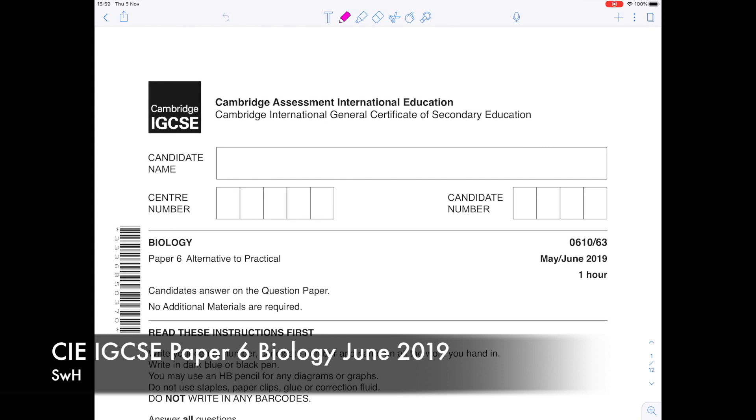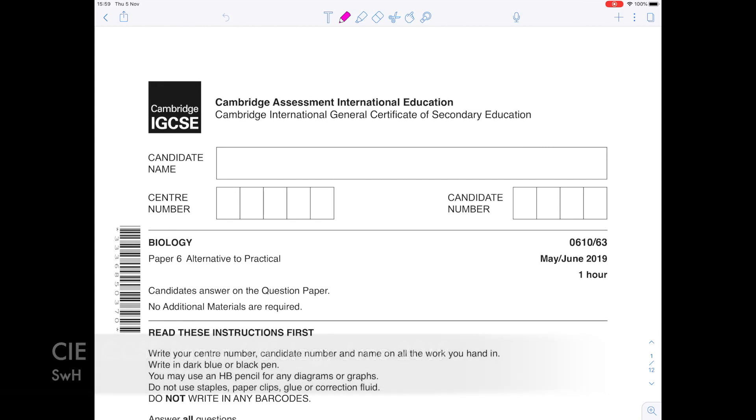Today I'm answering this CIE IGCSE Biology paper and it's the paper 6, Alternative to Practical.